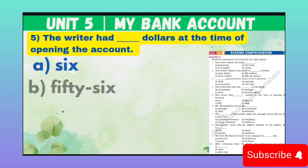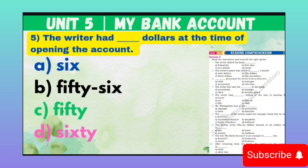MCQ number 5: The writer had blank dollars at the time of opening the account. It means account kholne ke waqt musannif ke paas kitne dollar the. Option A: 60. Option B: 56. Option C: 50. Option D: 60.